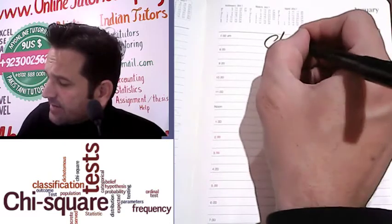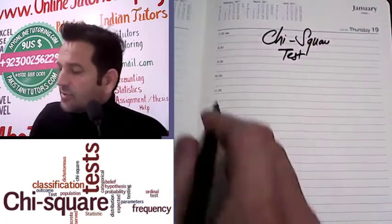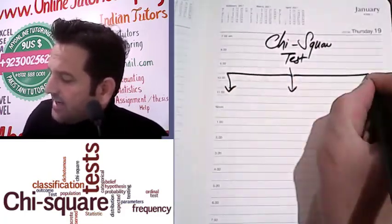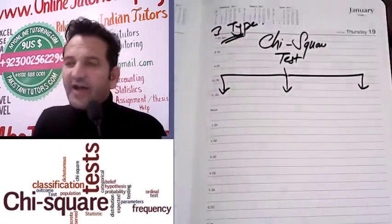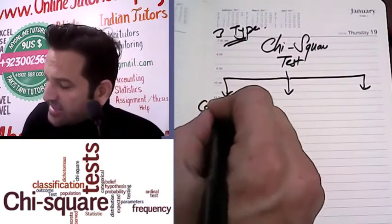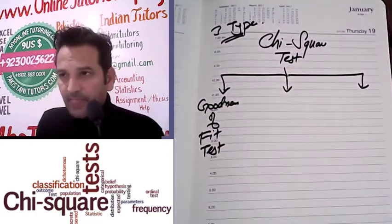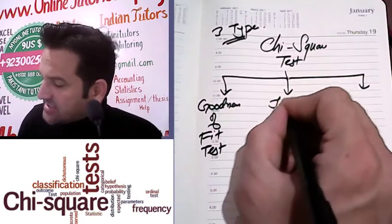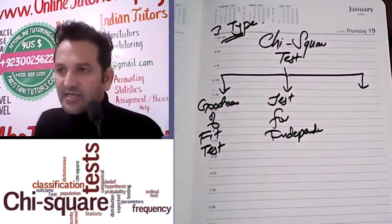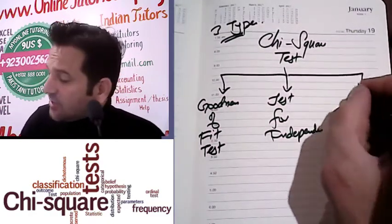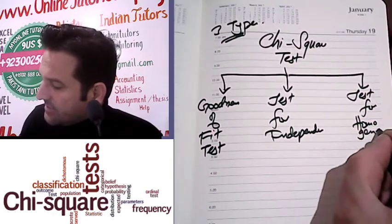Chi-square test is mainly divided into three types. One is known as the goodness of fit test. The second one is known as the test for independence. And the third chi-square test is known as the test for homogeneity.